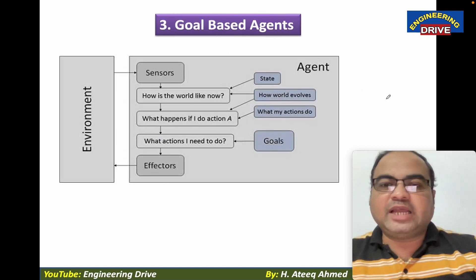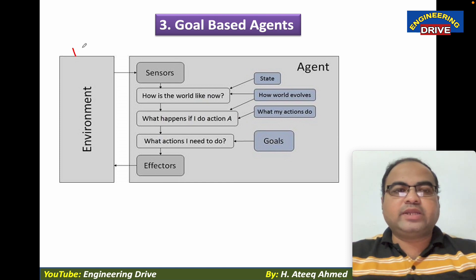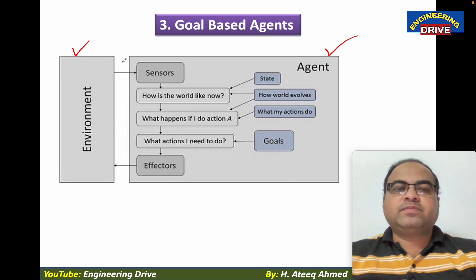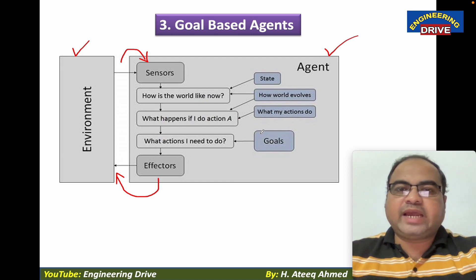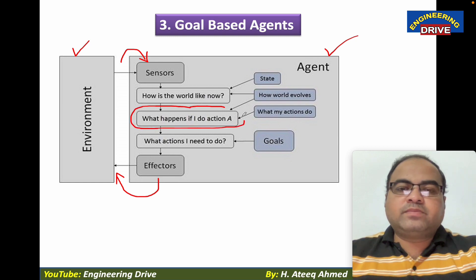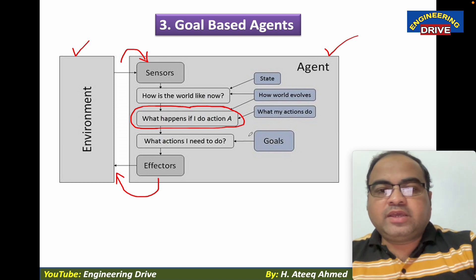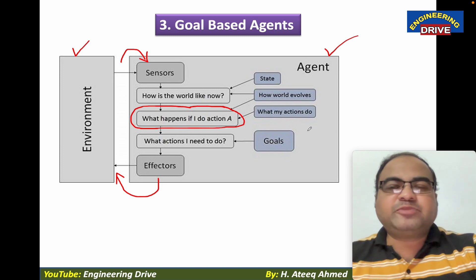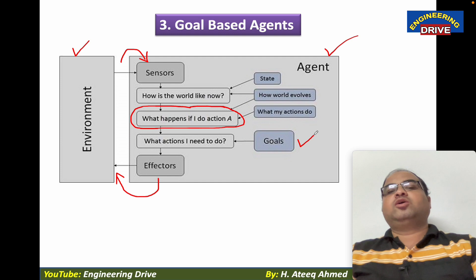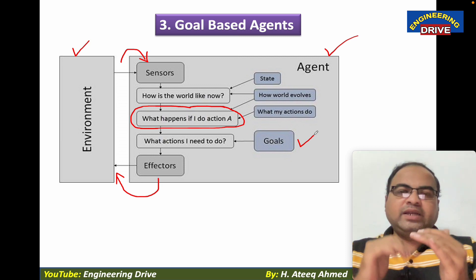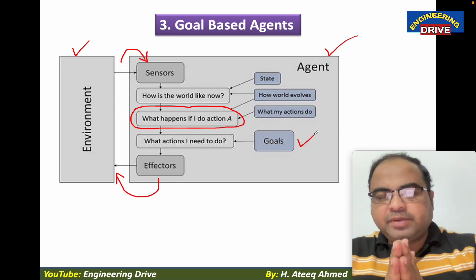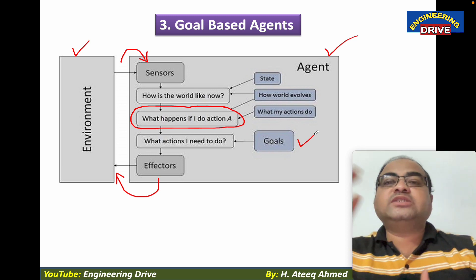Let me clarify this with the help of the diagram. We can see here the environment, agent, sensors — they will sense the percepts and then generate the actions through effectors. But here we have added extra things in the goal-based agent. What happens if I do action A? The condition-action rule has been eliminated here, and instead we have goals. A goal-based agent, while performing any type of action, always keeps in mind whether by doing this action the goal is achievable or not.